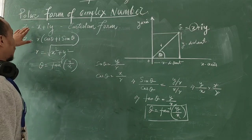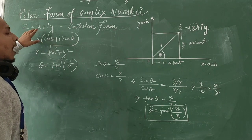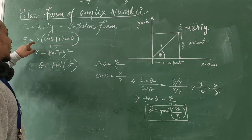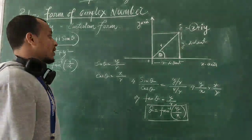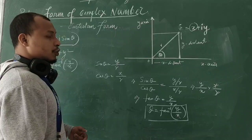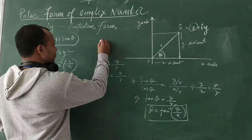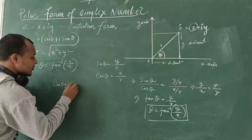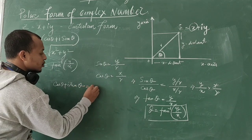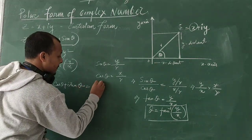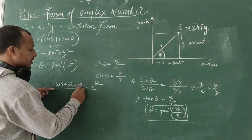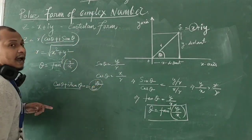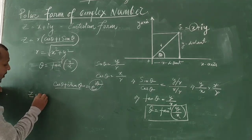So if you are given a complex number in Cartesian form, you can convert it into polar form. Also, using Euler's formula — which states that cosθ + i sinθ = e^(iθ) — we can write the polar form as Z = R·e^(iθ).